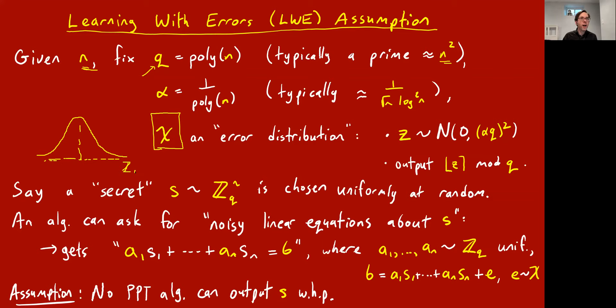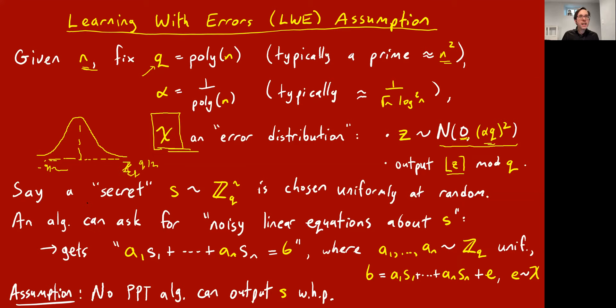Having fixed all these parameters, there's an algorithmic game. Somebody chooses a secret vector s — a list of n numbers mod q chosen uniformly at random. The algorithm playing the game gets to ask for noisy linear equations about s. The algorithm can say: please give me one noisy linear equation about s. When it makes that request, coefficients a1 through an are chosen uniformly as integers mod q.